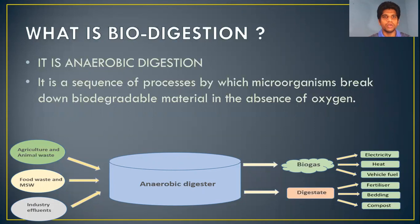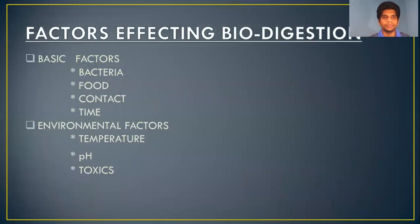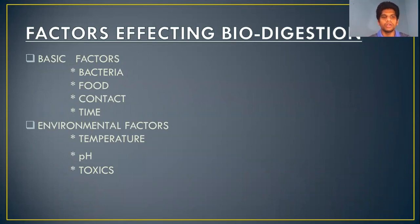Now let's move on to the factors affecting biodigestion. There are mainly two factors: basic factors and environmental factors. Basic factors are further classified as bacteria, food, contact, and time. And the environmental factors are classified as temperature, pH, and toxics.